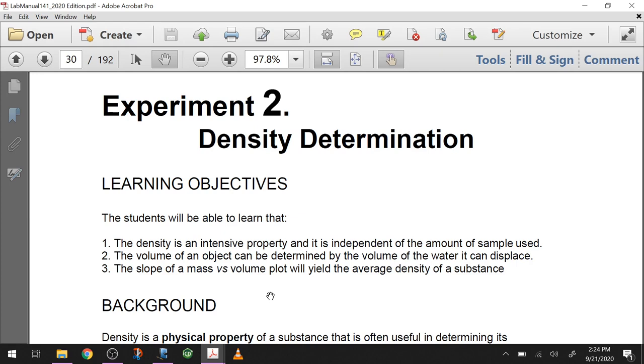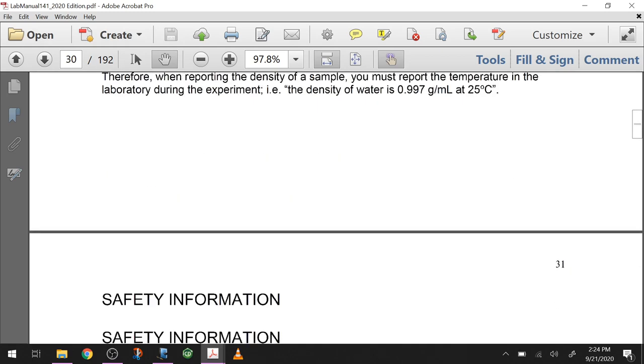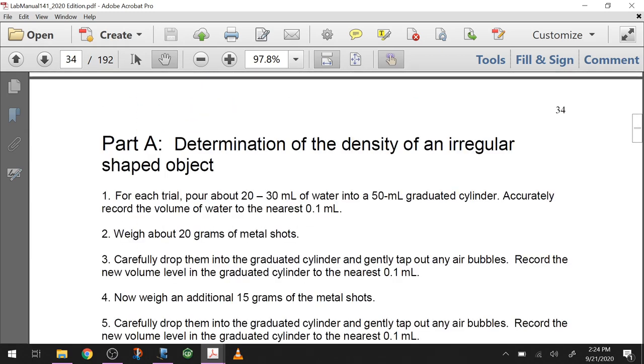This experiment has two basic parts: density of irregular objects. When we have something that's irregular, we can't calculate its volume using a geometric formula the way we can for a cube, sphere, or cylinder. We have to deal with its volume by displacement.